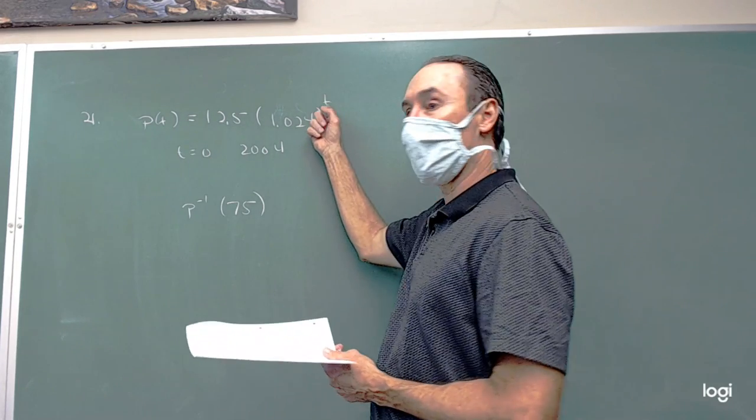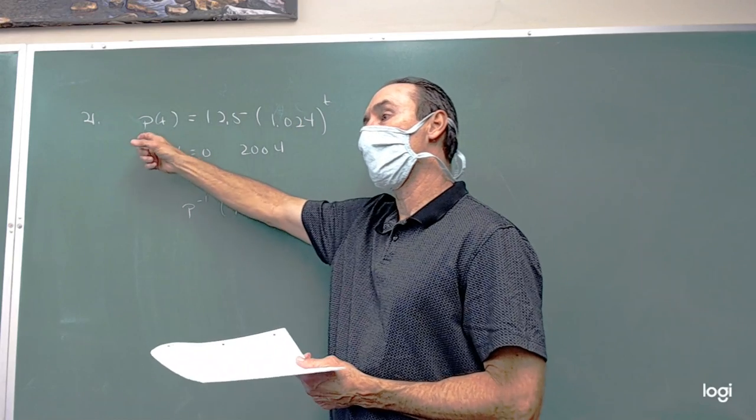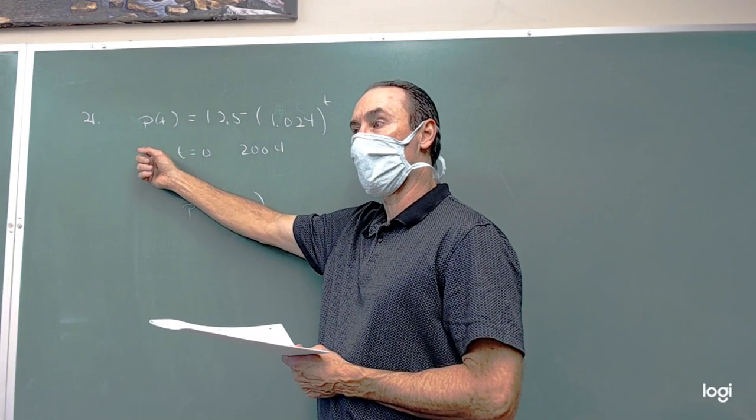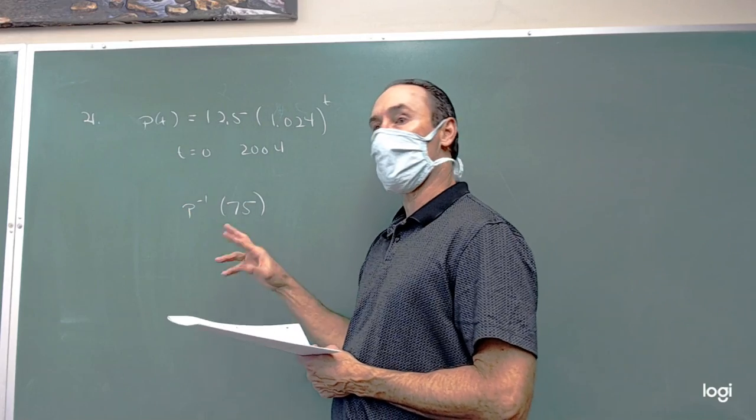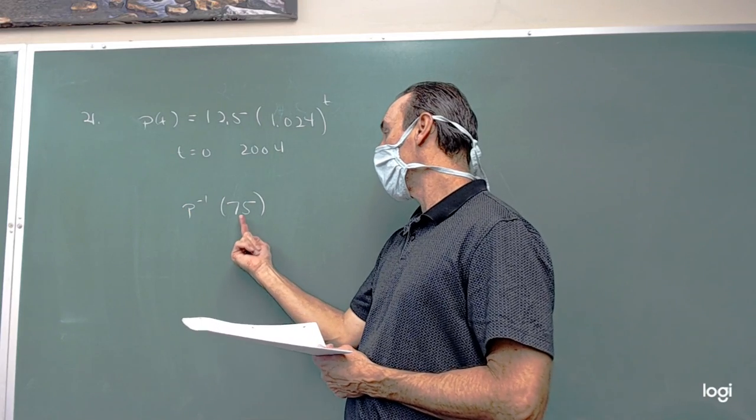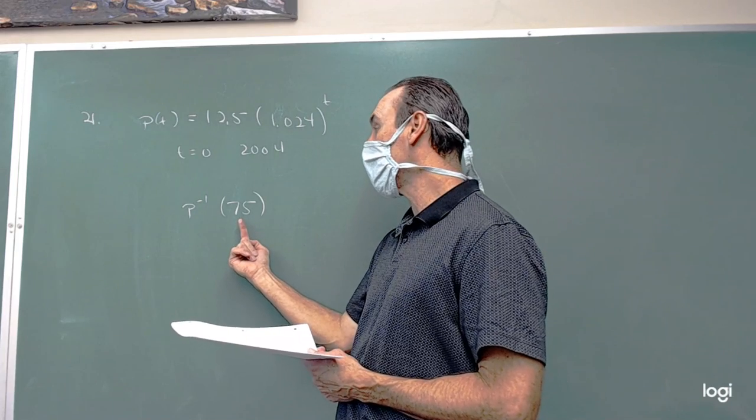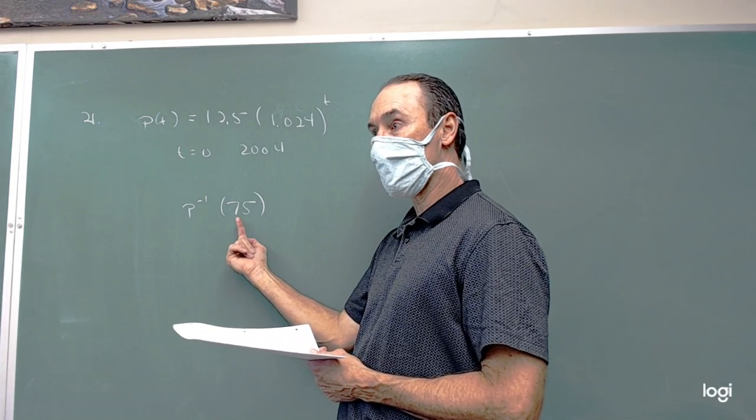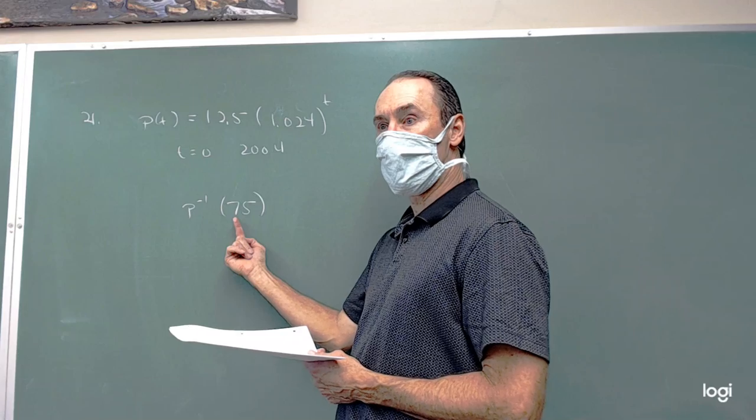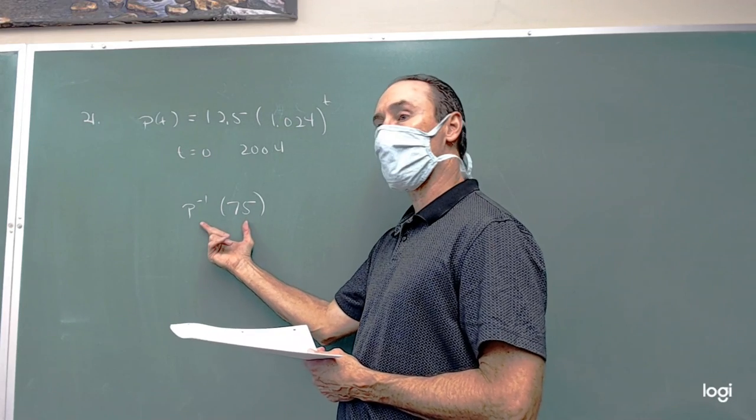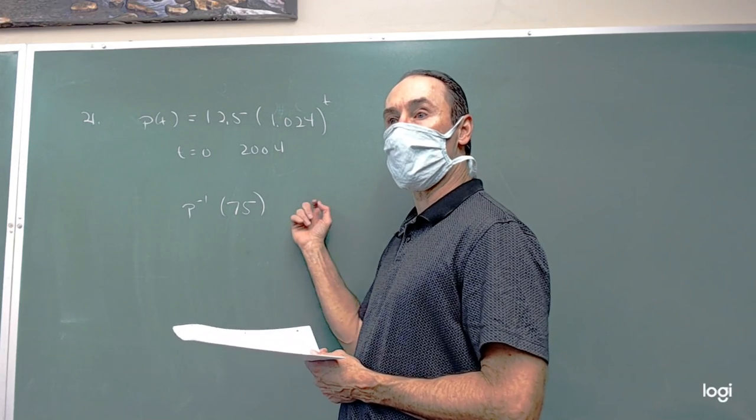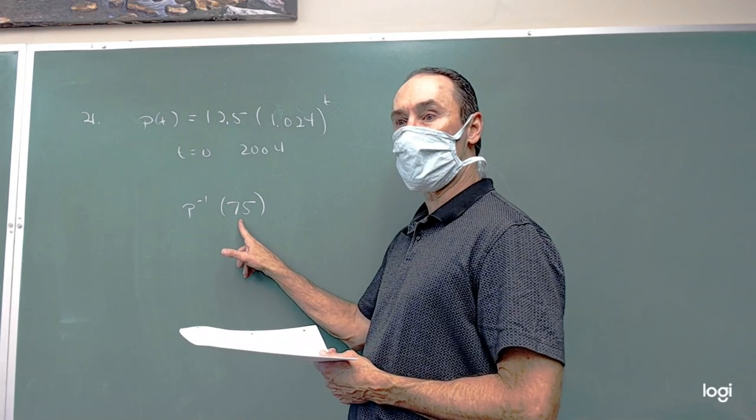We're inputting years, number of years. We're outputting some kind of dollars and cents price. An inverse is going to switch those around. This 75 is not a time in years. It's actually the price, dollars and cents. What we want for an answer is going to be how many years will it take until the price is going to reach 75.